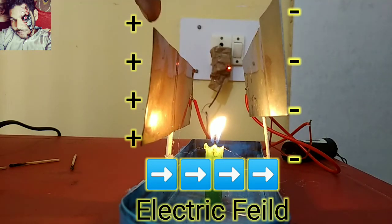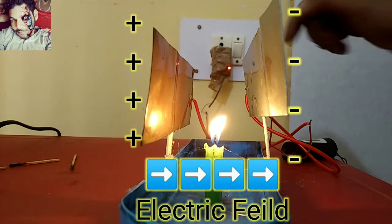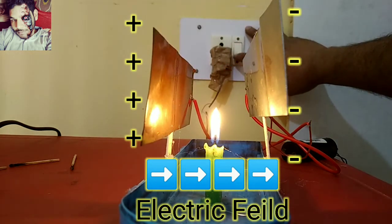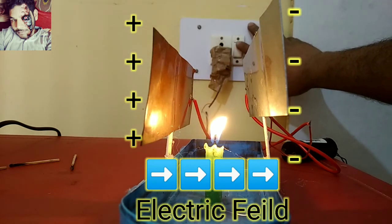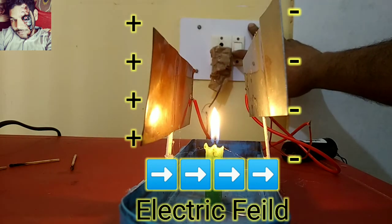So this is positive charge and this is negative charge. So this is the electric field between the two plates of a conductor in which I have placed a candle and the flame is...